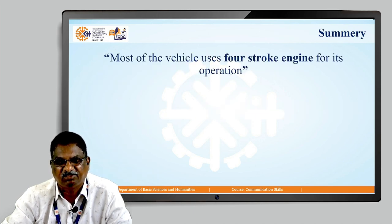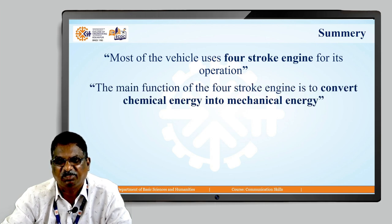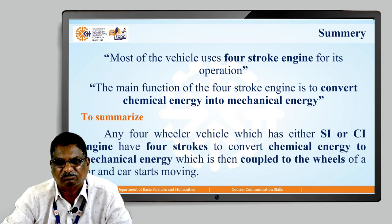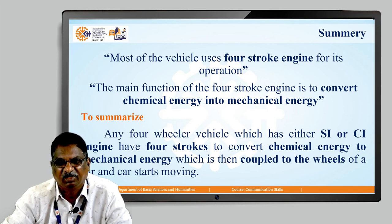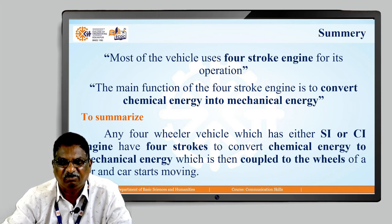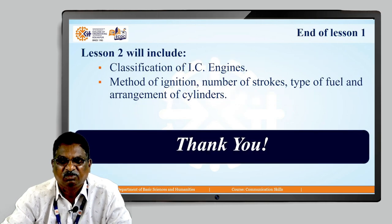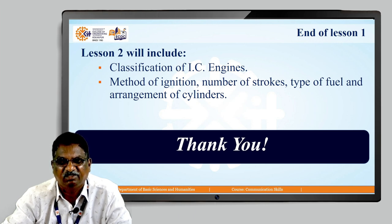Summary of today's lecture: most vehicles use a four-stroke engine. The main function of the four-stroke engine is to convert chemical energy into mechanical energy. Any four-wheeler vehicle with either an SI or CI engine has four strokes to convert chemical energy to mechanical energy, which is then coupled to the wheels to make the car move. This is the end of lesson one. In lesson two you will learn about the classification of IC engines, method of ignition, number of strokes, type of fuel, and arrangement of cylinders. Thank you very much.